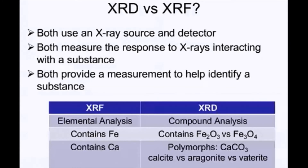With XRD, the same analysis will yield information such as hematite or magnetite, as shown on the right-hand column. XRF will give you total elemental calcium regardless of how it's structured, whereas XRD can show you the polymorphs — calcium carbonate as calcite, aragonite, or vaterite. This is the main distinguishing difference between the two techniques.